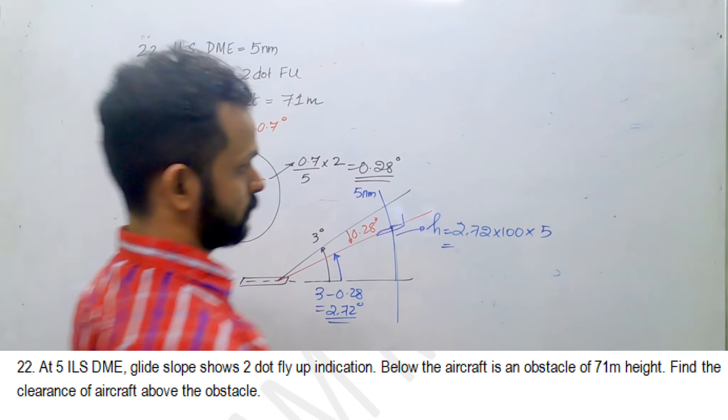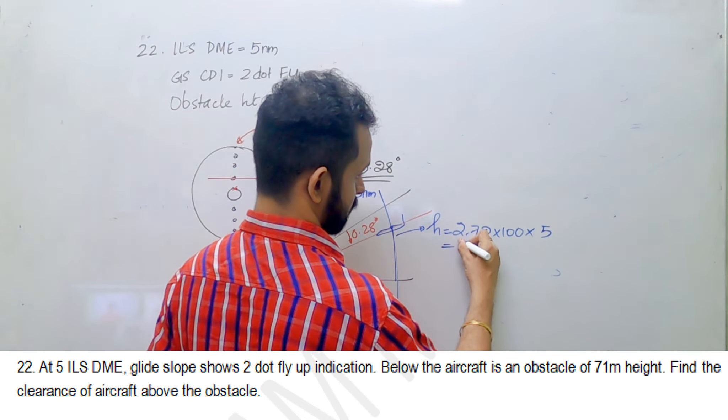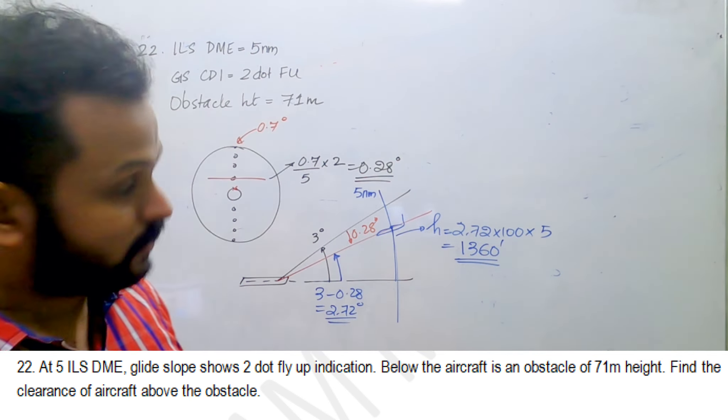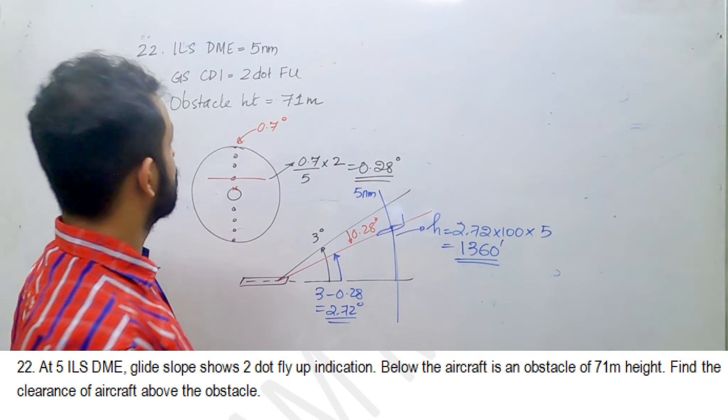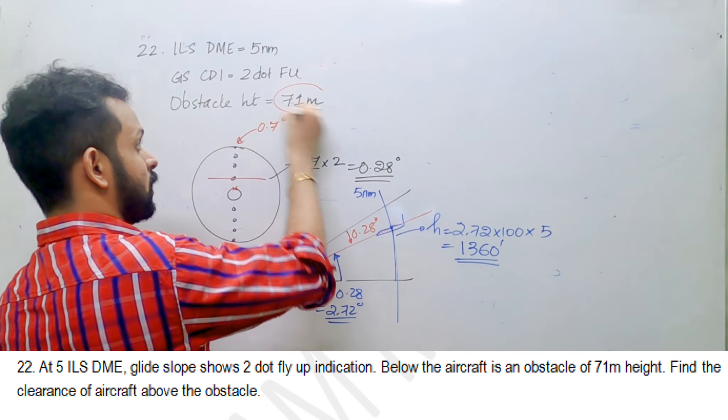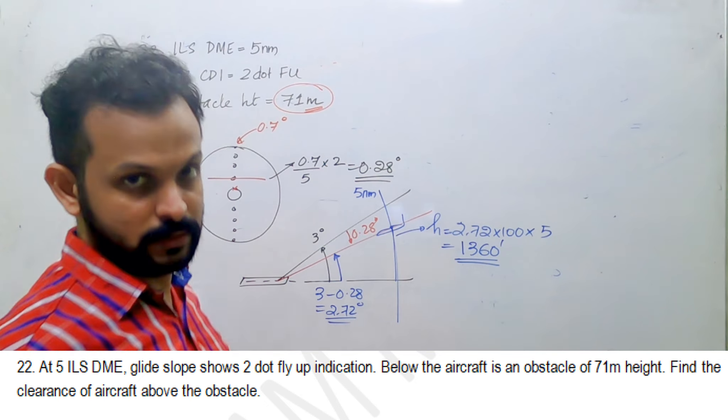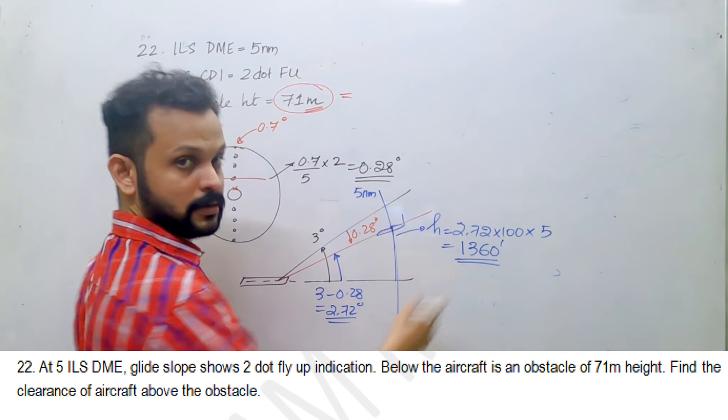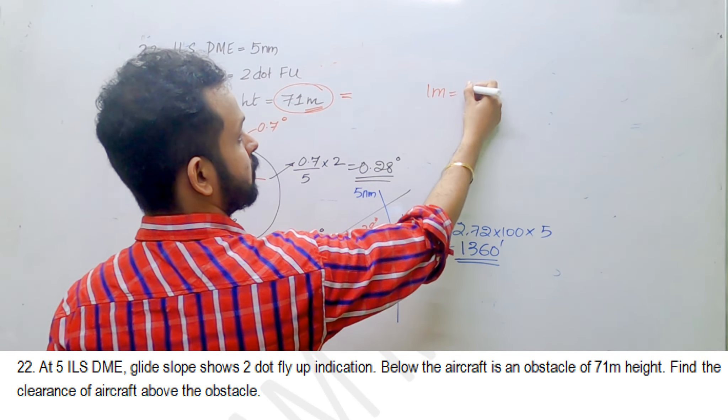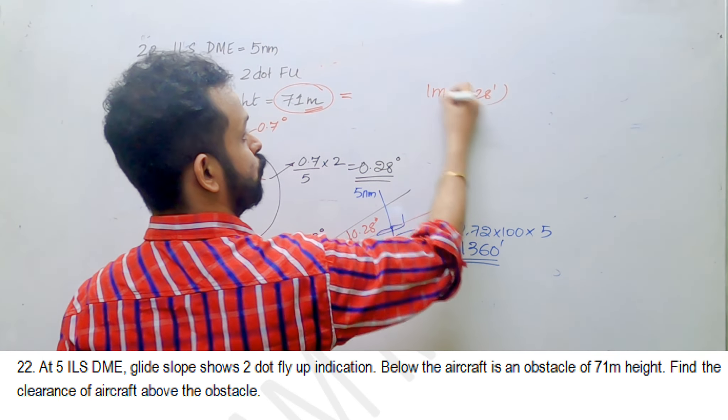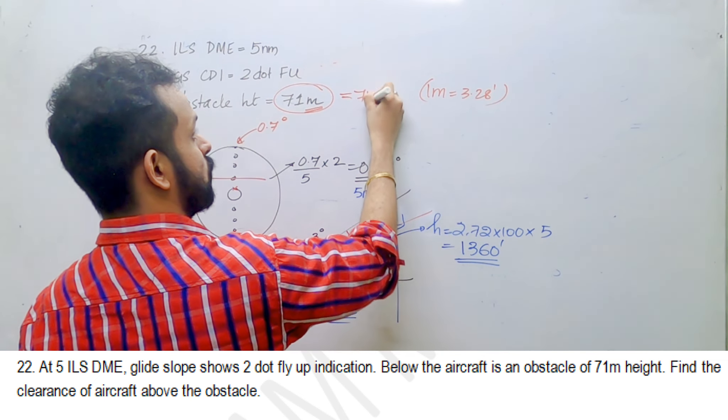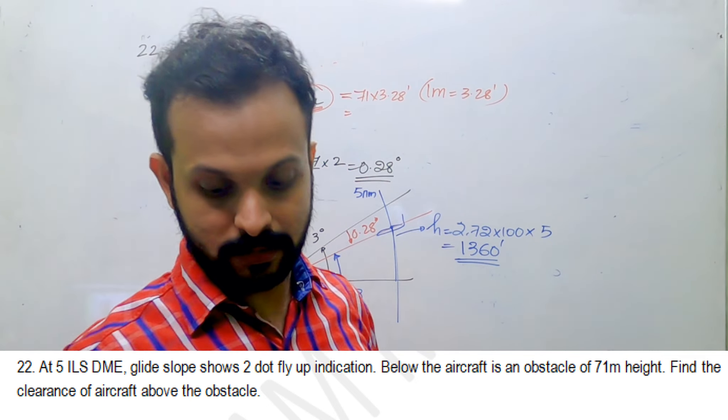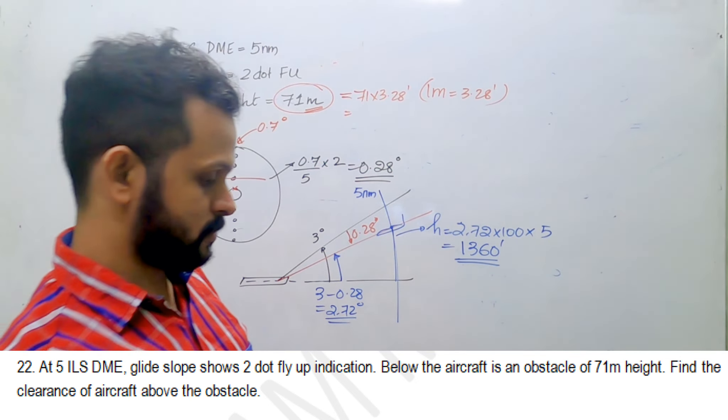What is the obstacle here? 71 meters. Obstacle height is 71 meters, do not forget that. So what is 71 meters in feet? 233. One meter is 3.28 feet. 71 into 3.28 and you can use your nav computer unit conversions tab. The answer is 233 feet.